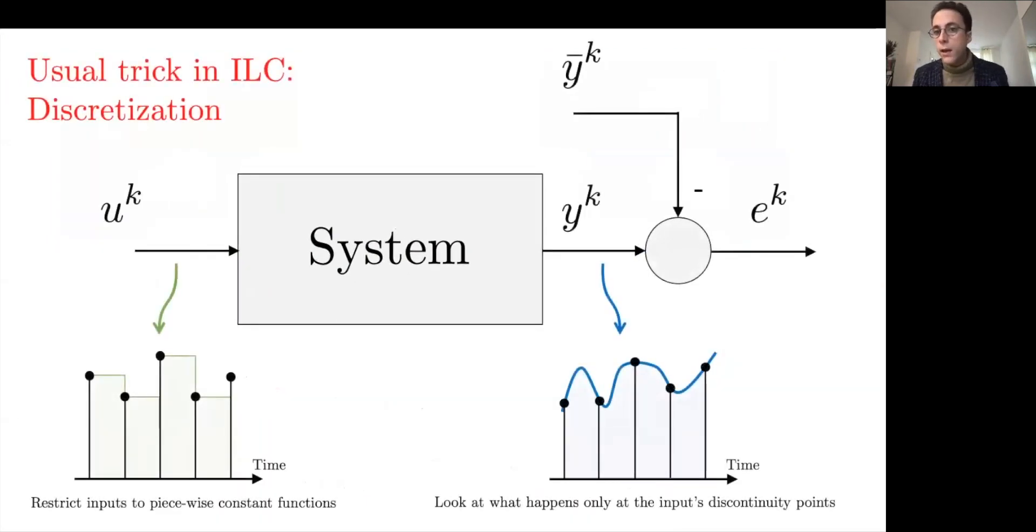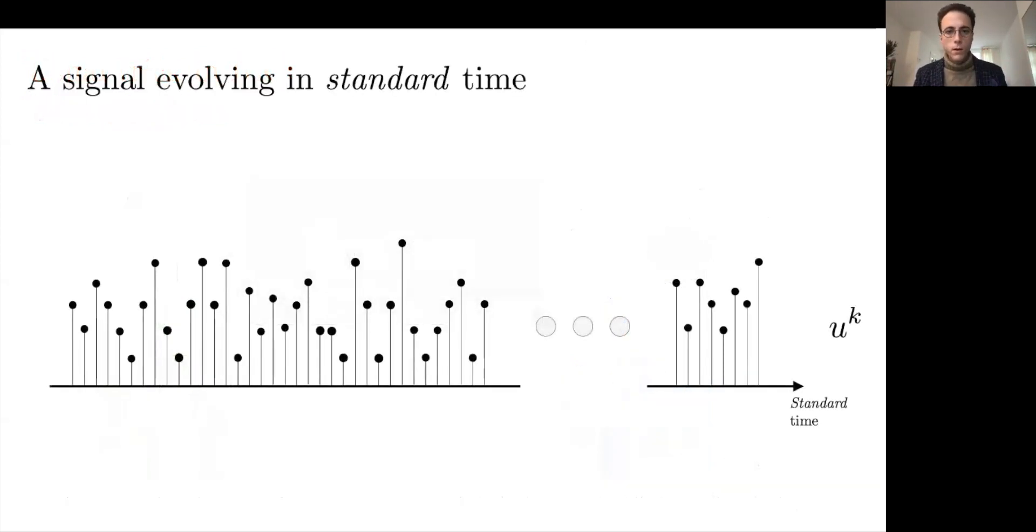The way in which the linear iterative learning control literature deals with this issue is to impose a discretization. What is very important here, and will be important later, is that this most often is a discretization, not something inherent with our plant. Typically, these frequencies are much lower than the frequency of a microcontroller. So on one hand, we restrict our inputs to piecewise constant functions, and in terms of the output, we just look at the output at the moment in which we have discontinuities on the inputs.